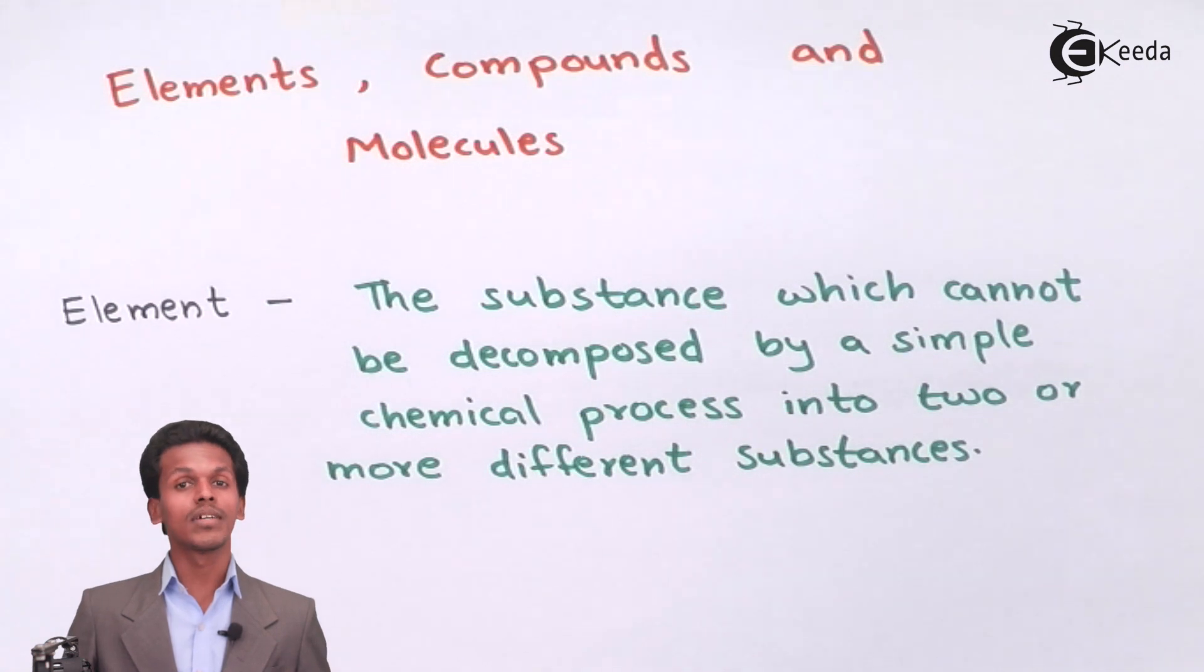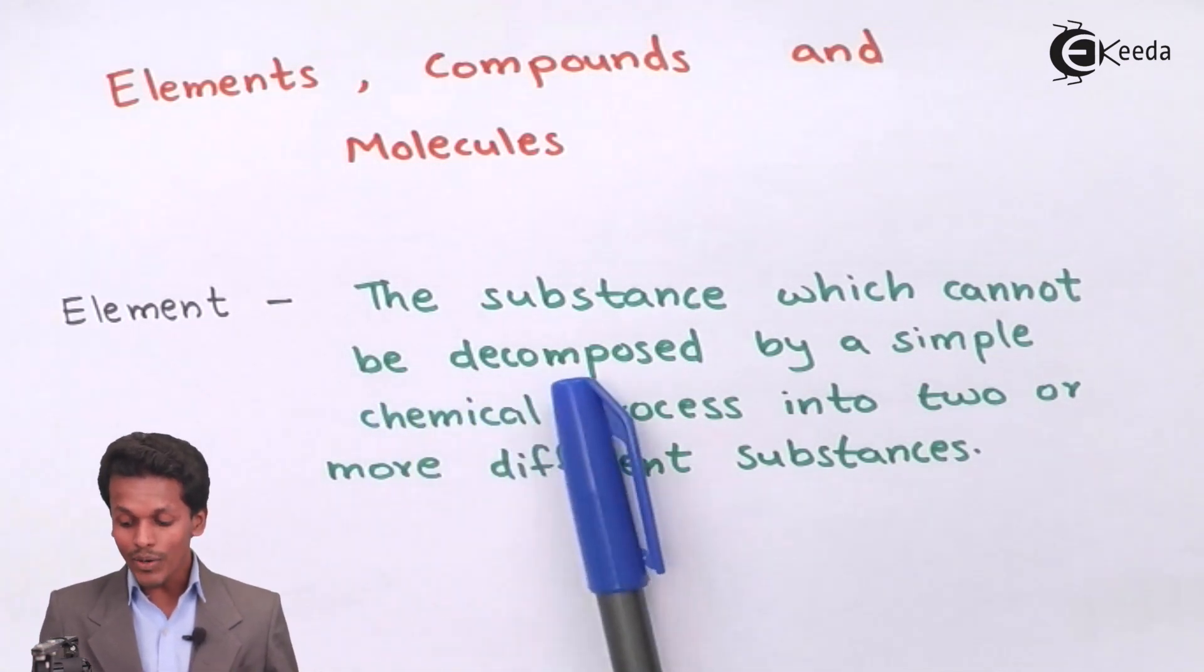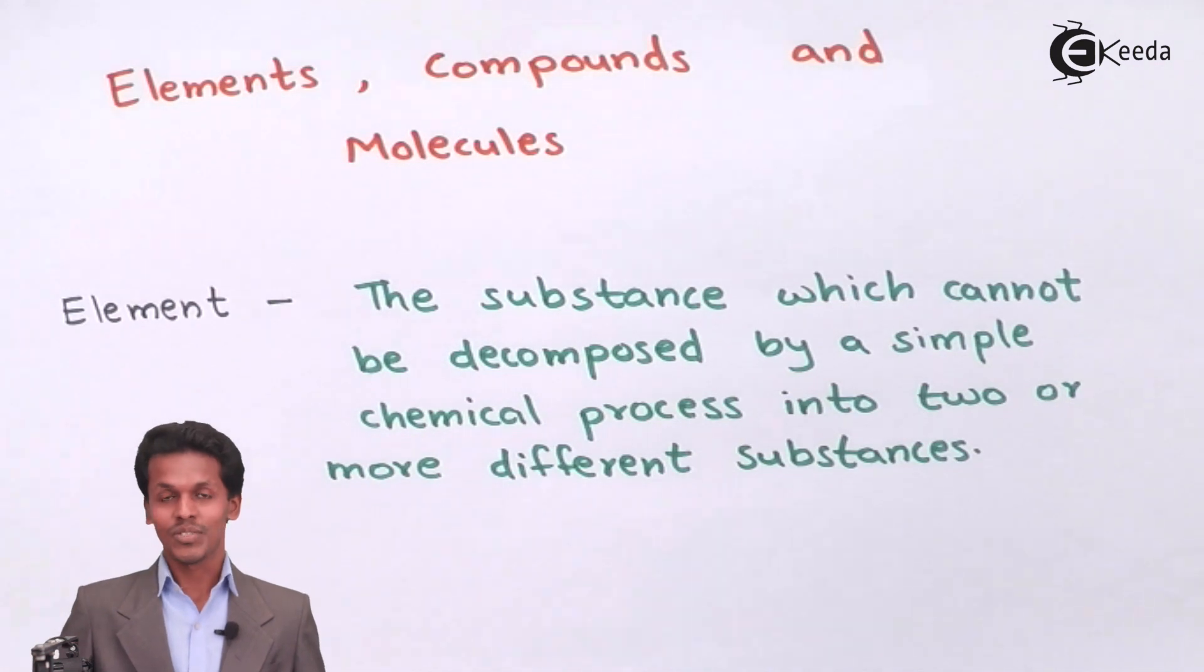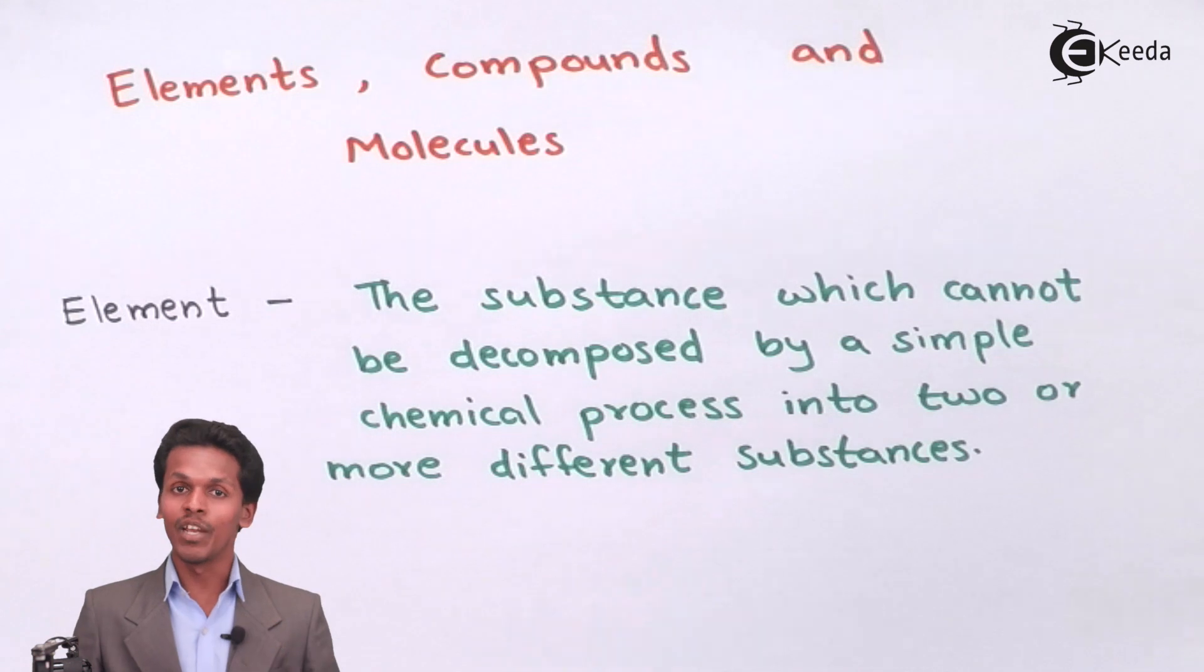Let me talk about carbon. Carbon is a particular element in which, even though if you break it, it will divide into two. Suppose a substance divides into two carbons, but the both carbons will not be different from each other. Therefore we cannot differentiate it by normal chemical processes, so we cannot decompose it by simple chemical process into two or more different substances. Therefore carbon, that is graphite, is said to be an element.